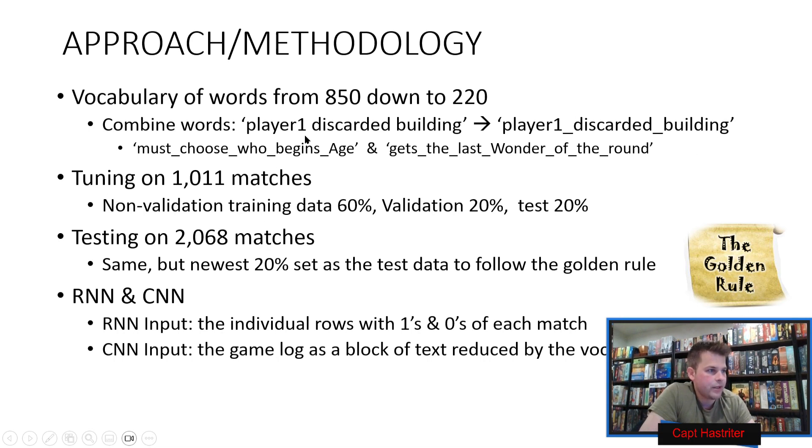Instead of player one discarded building, it became player one discarded building. Rather than a common thing that happens, now it's just one meaning that the convolutional neural network can memorize. We took 1000 matches and did some tuning, then took 2000 matches. The last 20% were used as a test. We followed the golden rule, didn't use the test data to help change the model, only used it to report accuracy.